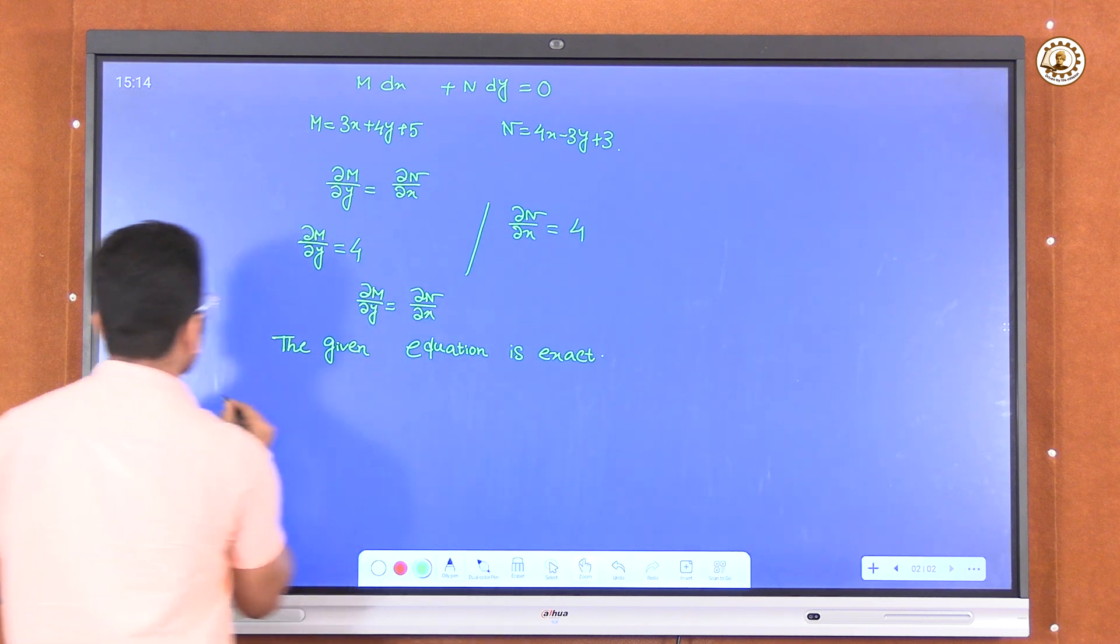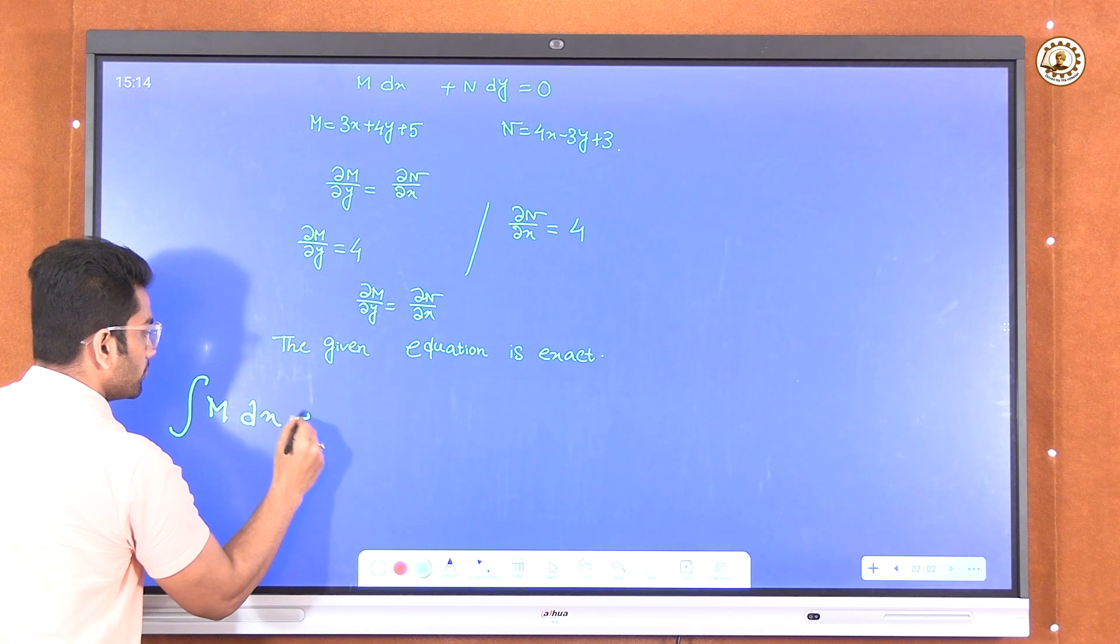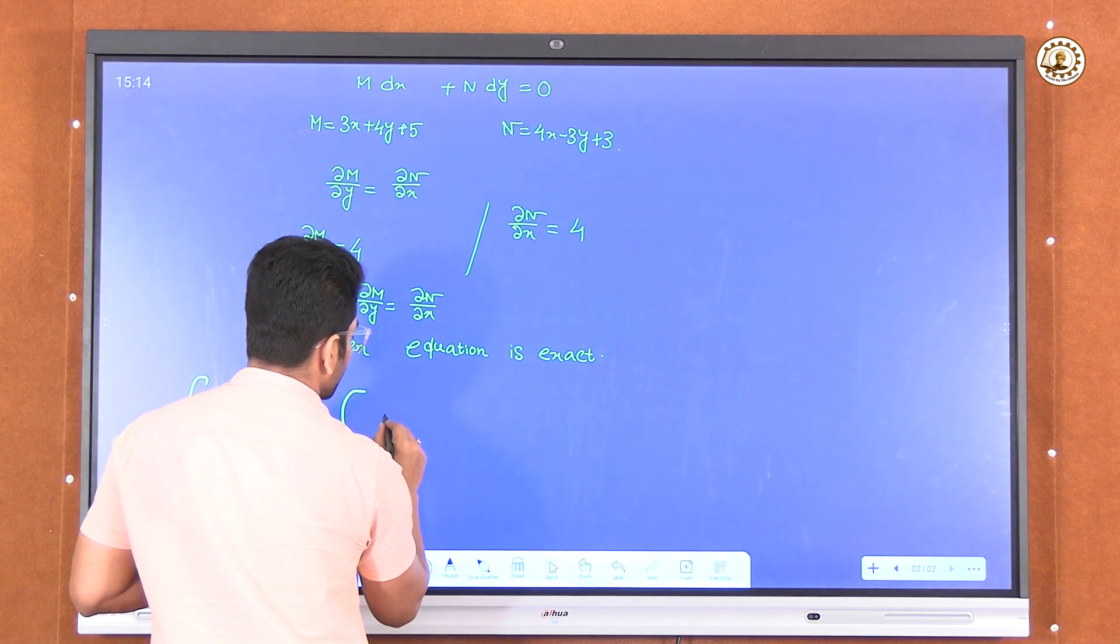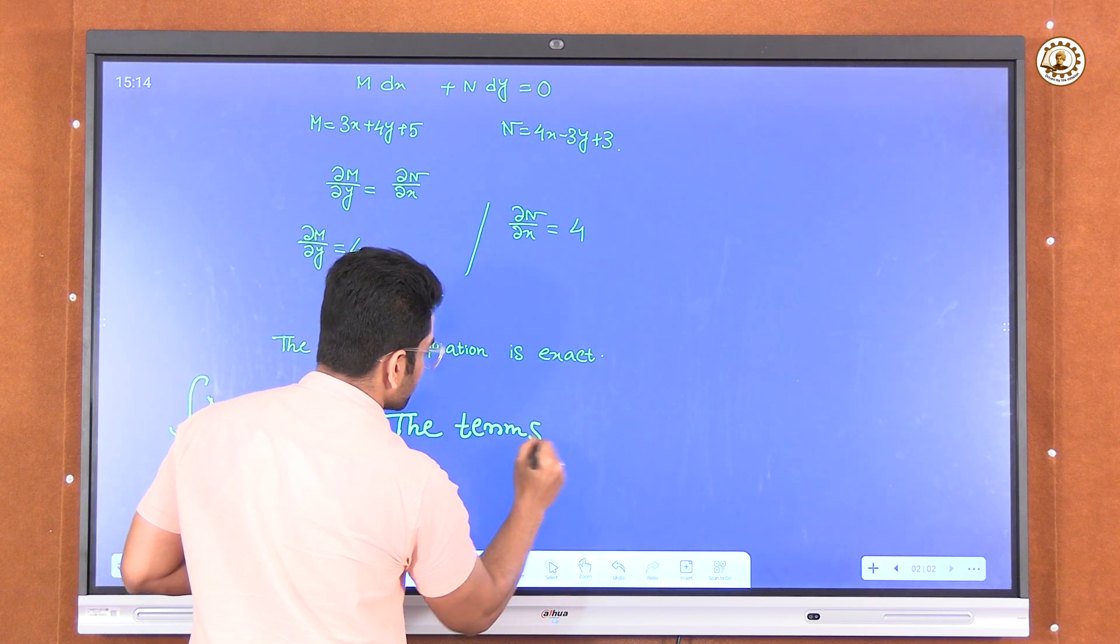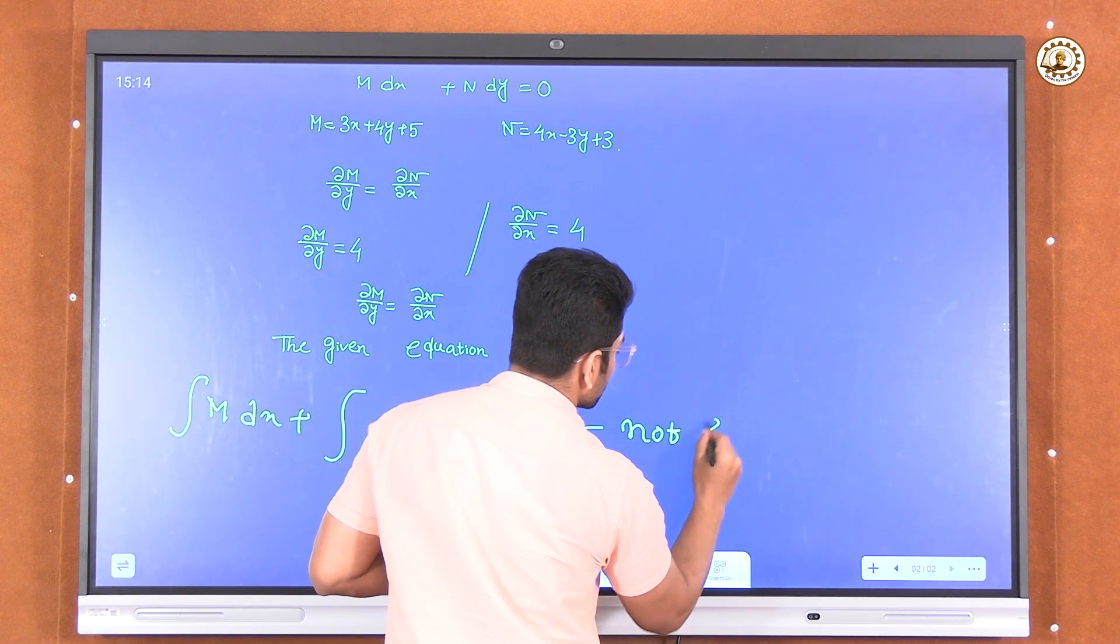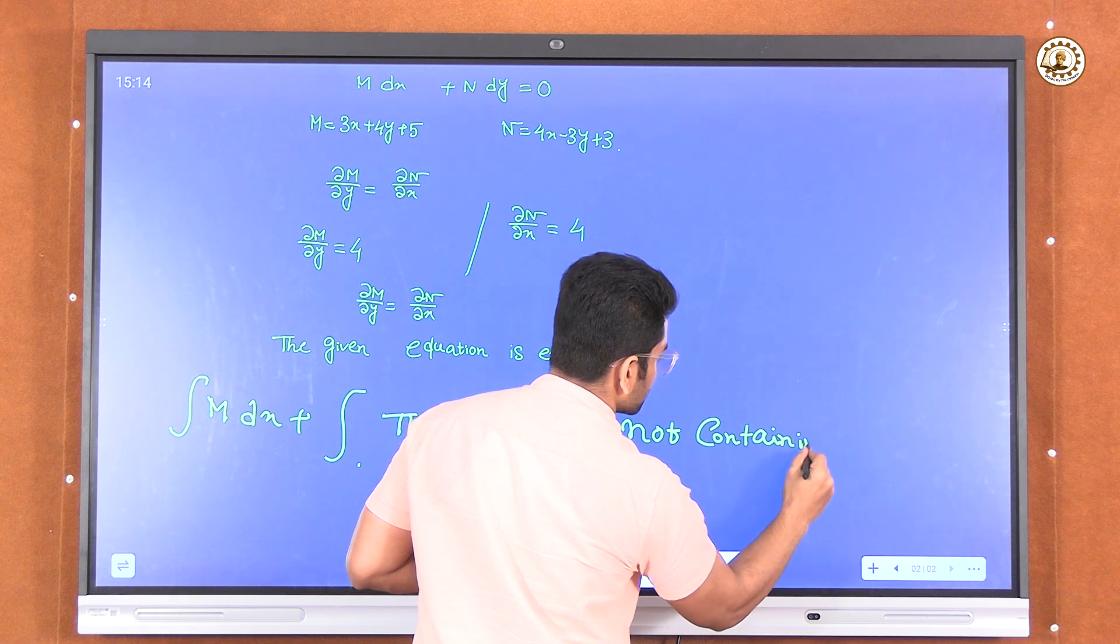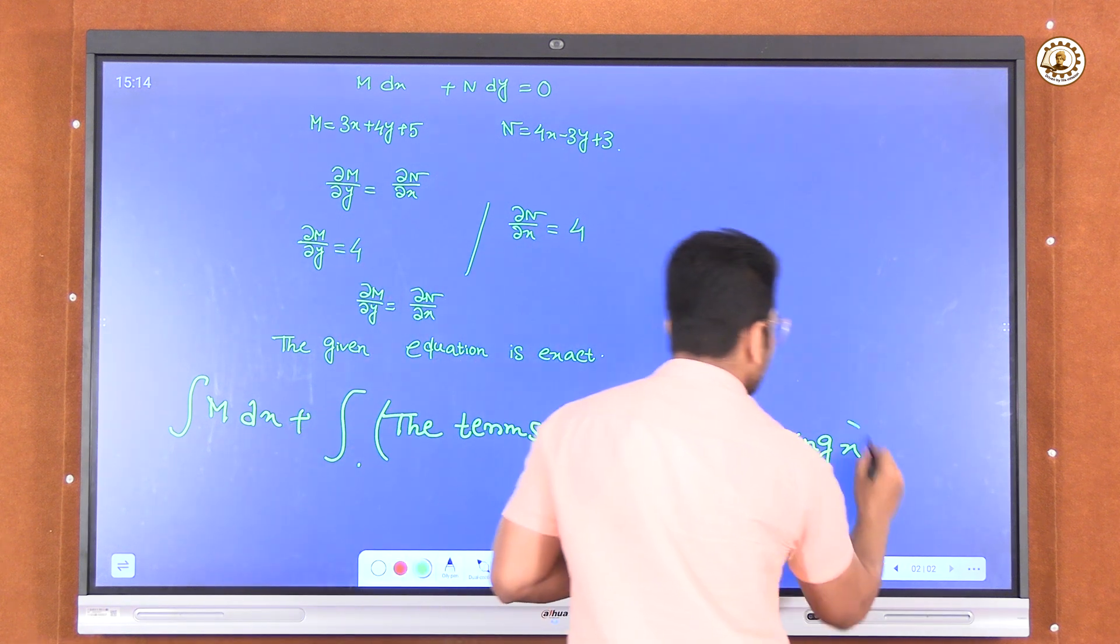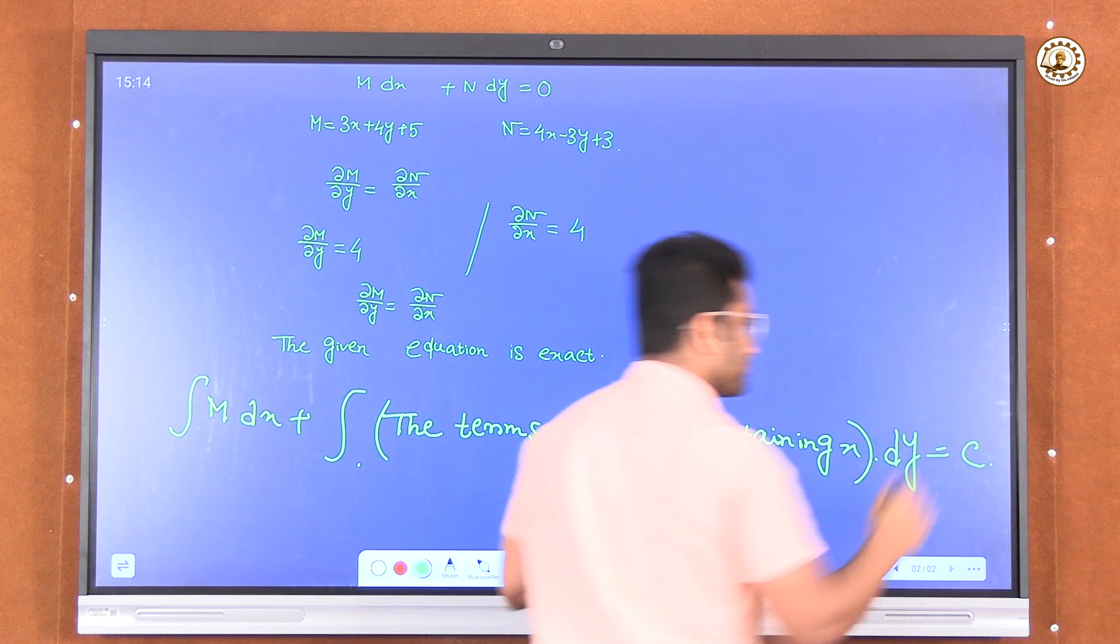So we have a formula: integration of M dx plus integration of terms of N not containing x dy equal to some constant c.